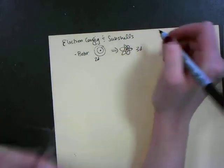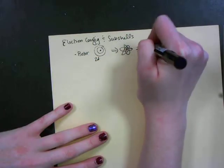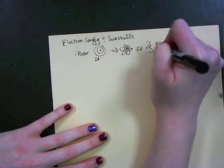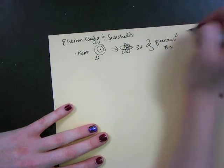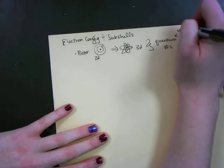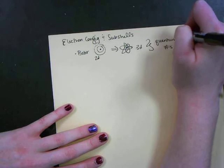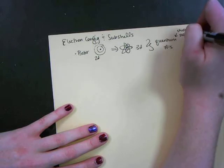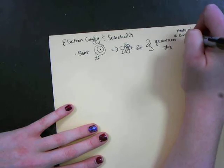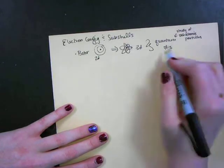For that we use quantum numbers. Quantum numbers, or quantum, is the study of subatomic particles, so we're looking at protons, neutrons, and electrons. That's what quantum means.